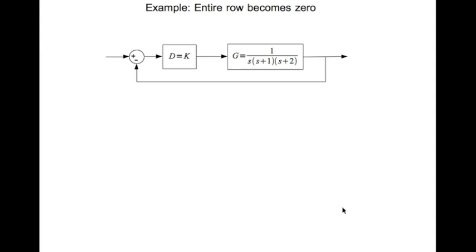So let's look at an example where an entire row becomes 0. We have this system where D equal to K. K is the controller parameter. The plant is 1 divided by s times s plus 1 times s plus 2. Just like we did before, we find the characteristic equation which is the denominator of the closed loop transfer function and set it to 0. We substitute our functions. We multiply throughout by the common denominator to get the characteristic equation in this form.